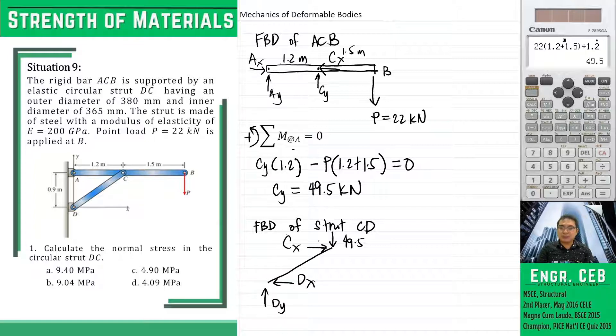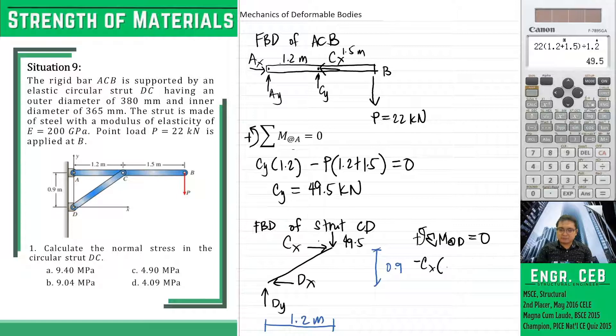Let's say we sum moment about point D. Take note of the distances. The vertical distance from C to D is 0.9 and the horizontal distance is 1.2 meters. So if we sum moments about point D equals 0, we can solve for the value of CX minus 49.5 times 1.2 equals 0.